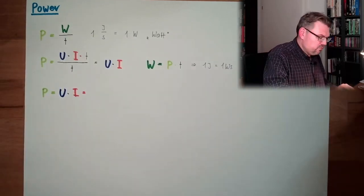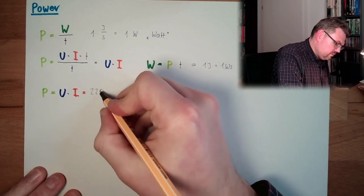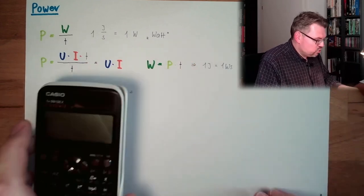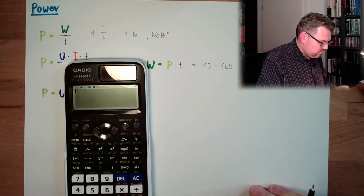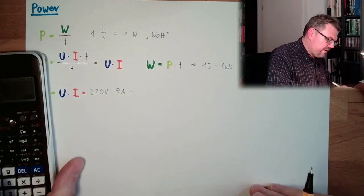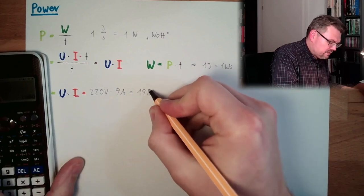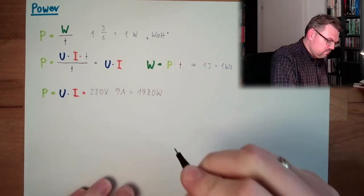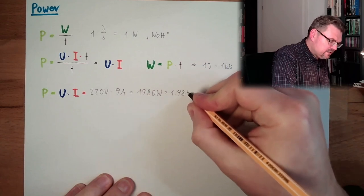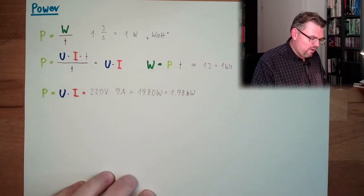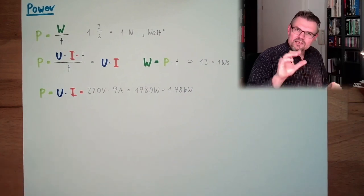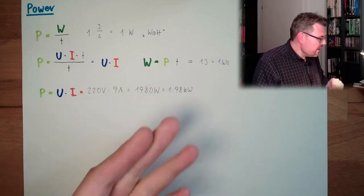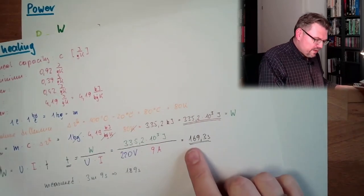So, this is 220 volts multiplied by 9A. What is the result? 220 multiplied by 9A equals 1980 watts. This is the power, roughly. It's 1.98 kilowatts. Roughly 2 kilowatts of power has this heater. And this was also printed on the label. And we needed 169.3 seconds.